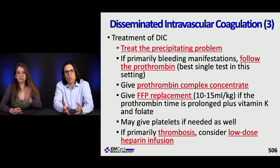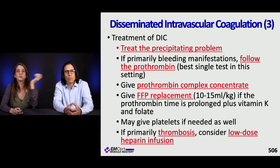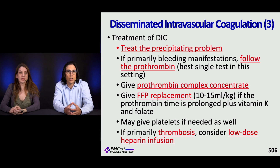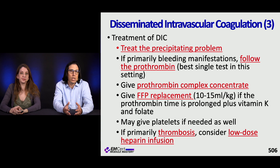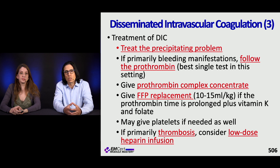Treatment of DIC is to address the underlying problem. The best single test to follow for bleeding-predominant DIC is the prothrombin time. You can give prothrombin complex concentrates to reverse bleeding, replace FFP if the PT is prolonged, and administer vitamin K and folate. Platelets may be given if needed. If thrombosis is predominant, heparin has been used.